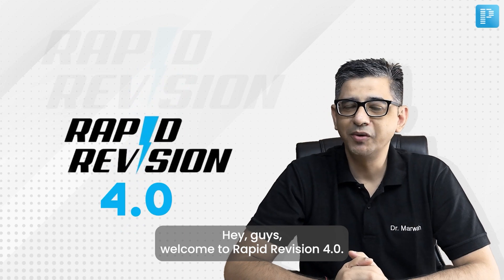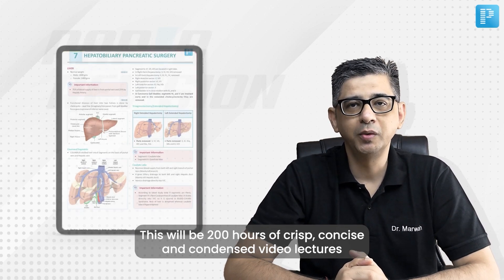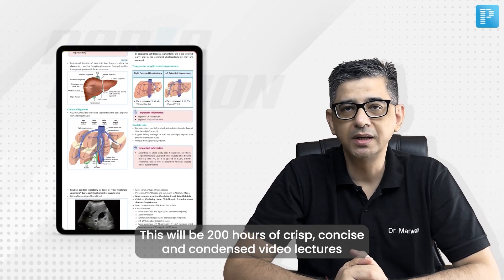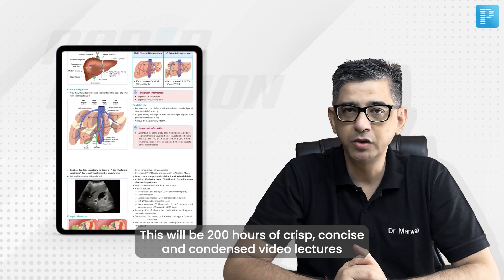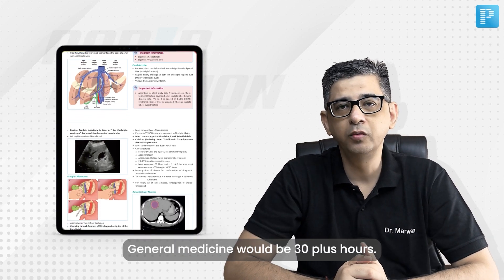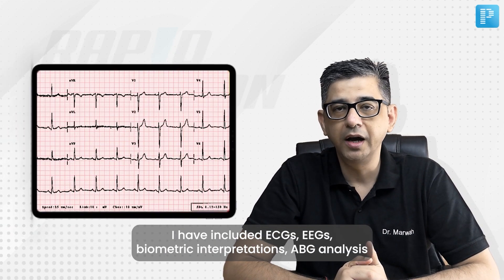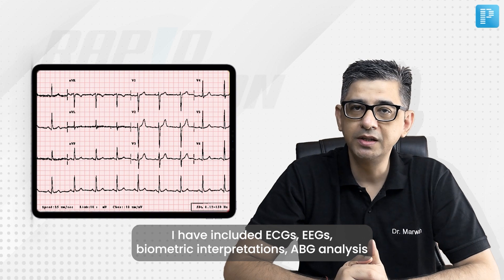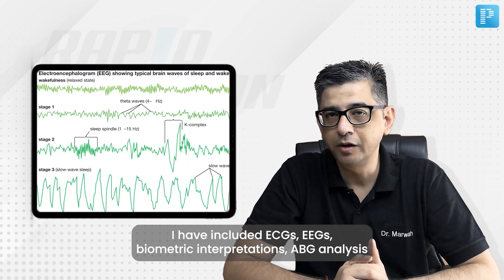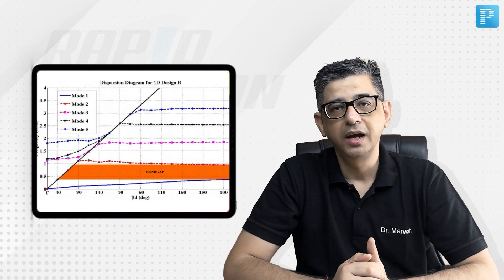Welcome to Rapid Revision 4.0. This will be 200 hours of crisp, concise, and condensed video lectures, out of which General Medicine will be 30 plus hours. I have included ECGs, EEG, spirometric interpretations, and EBG analysis in these 30 hours.